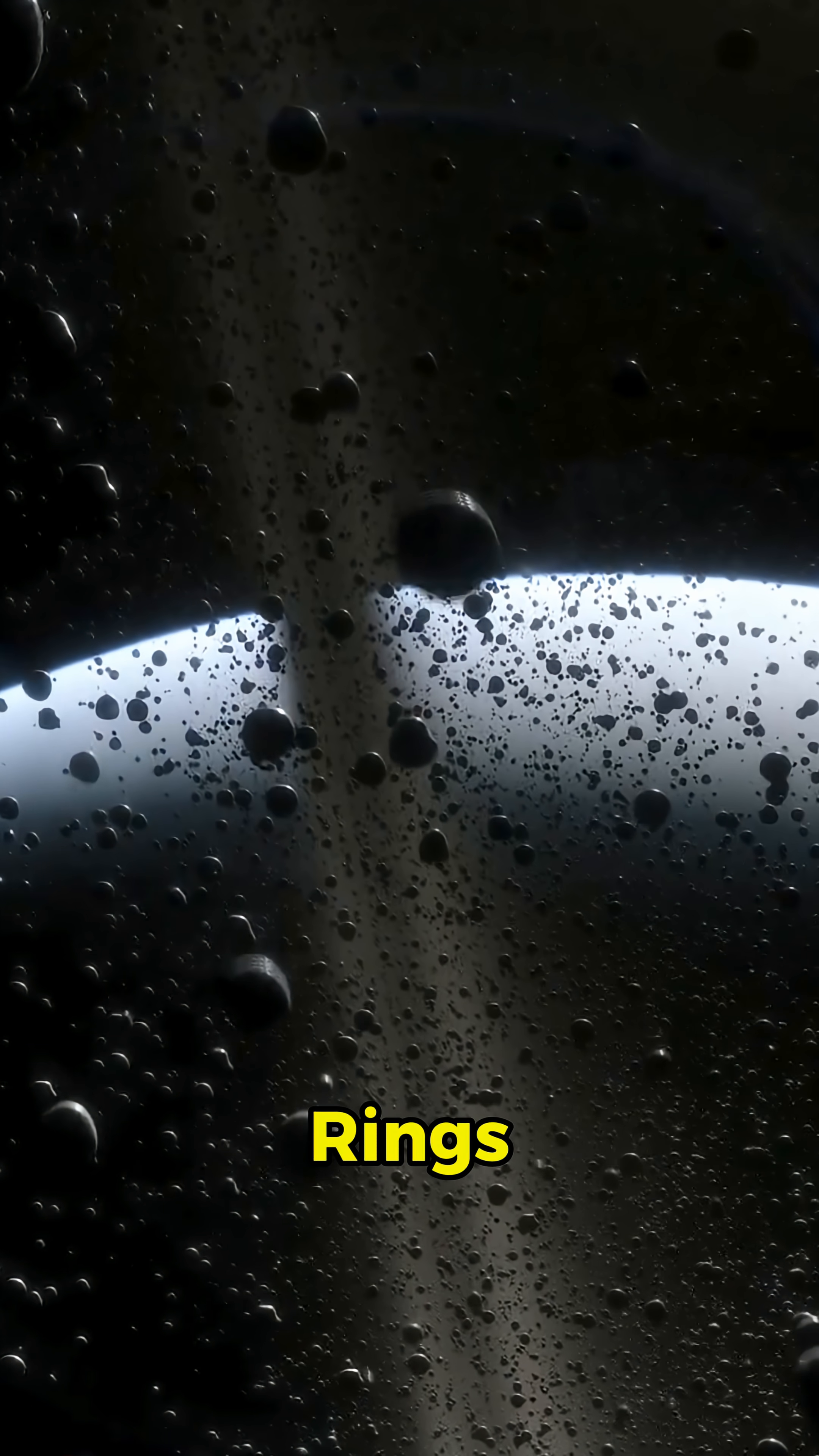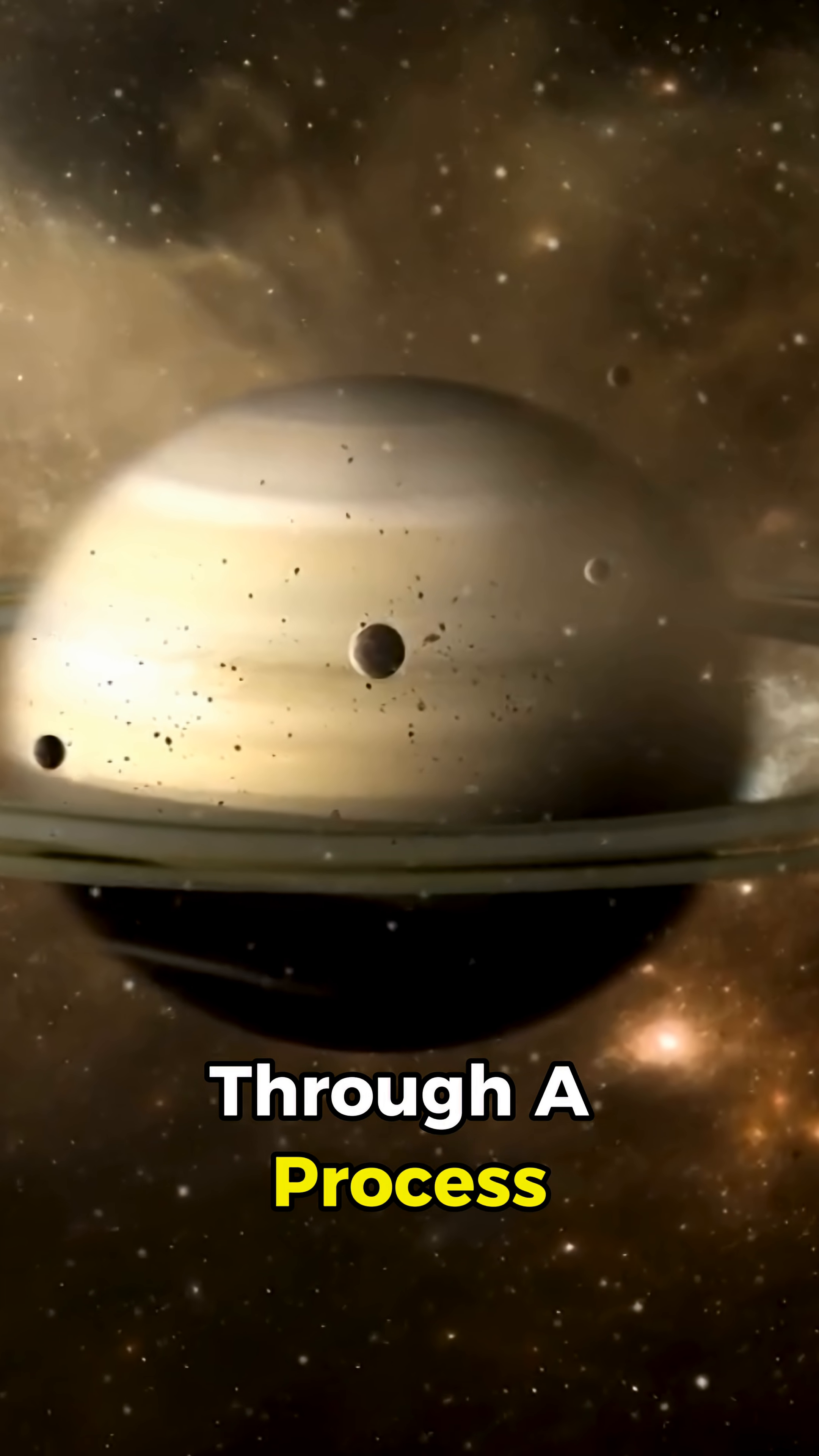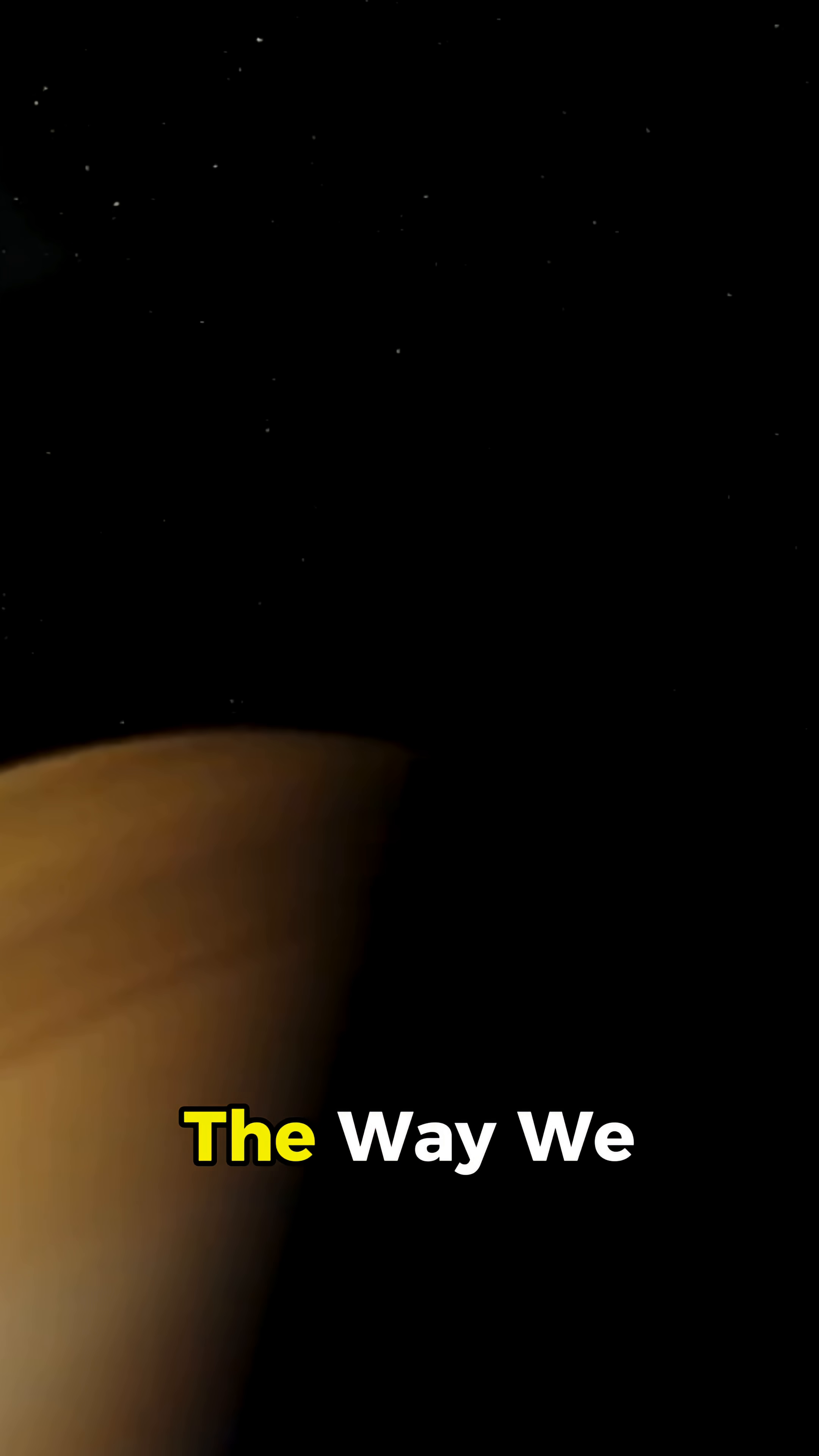The icy particles that make up the rings are slowly being pulled into Saturn by gravity and through a process called ring rain. That means future generations might never see Saturn's rings the way we do.